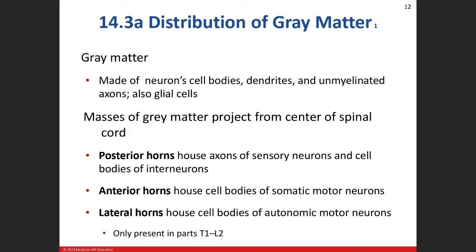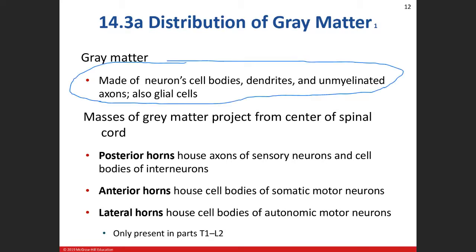So this is some lab material I want to pull back with you. Important concepts from this slide: gray matter is anywhere where you cannot find myelin — unmyelinated axons, cell bodies, dendrites, and glial cells. Glial cells do not have myelin. So if you know that, then white matter is just going to be myelinated axons. It gets its white coloration from the myelin produced in the central nervous system by the oligodendrocytes.